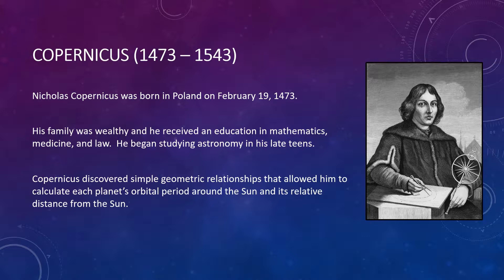In his quest for a better way to predict planetary positions, Copernicus decided to try Aristarchus' sun-centered idea, first proposed more than 1700 years earlier. He recognized that a much simpler explanation for apparent retrograde motion — that backwards motion of planets in the sky — was offered by a sun-centered system. But he went far beyond Aristarchus in working out the mathematical details of the model.